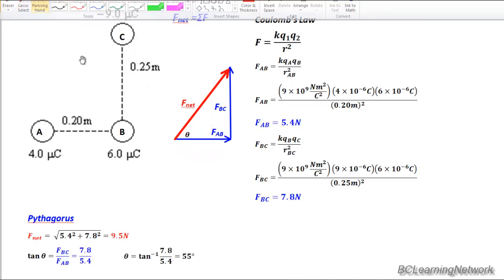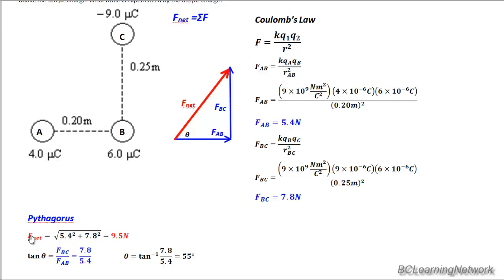So to wrap this question up, as I mentioned, we have our Pythagoras. So A squared plus B squared equals C squared, where the C squared will be Fnet. So Fnet will be the square root of 5.4 squared plus 7.8 squared, and we get 9.5. So that's the value of our net force.